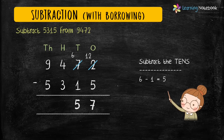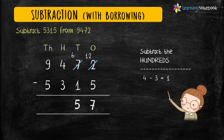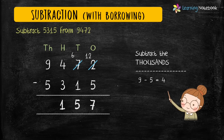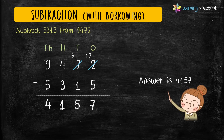Now subtract the digits at hundreds place: 4 minus 3 equals 1. And in the end, let's subtract the digits at thousands place: 9 minus 5 equals 4. So our answer is 4157.